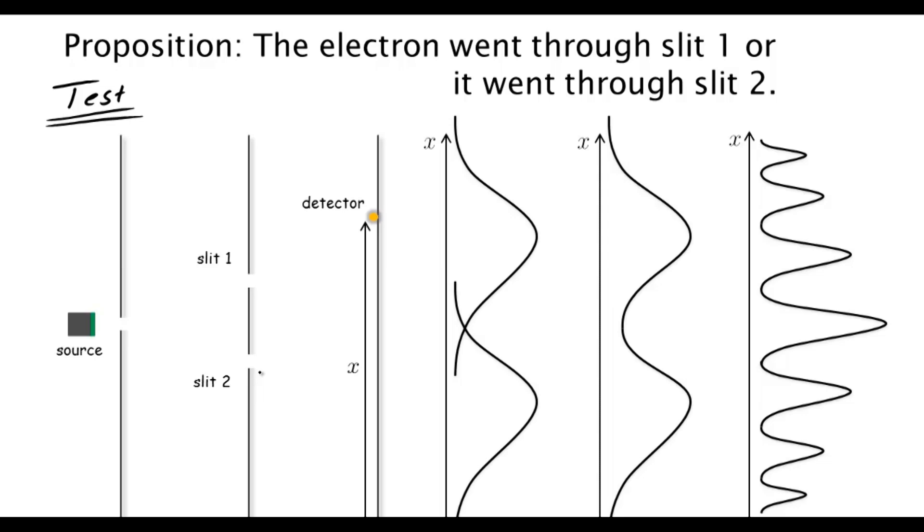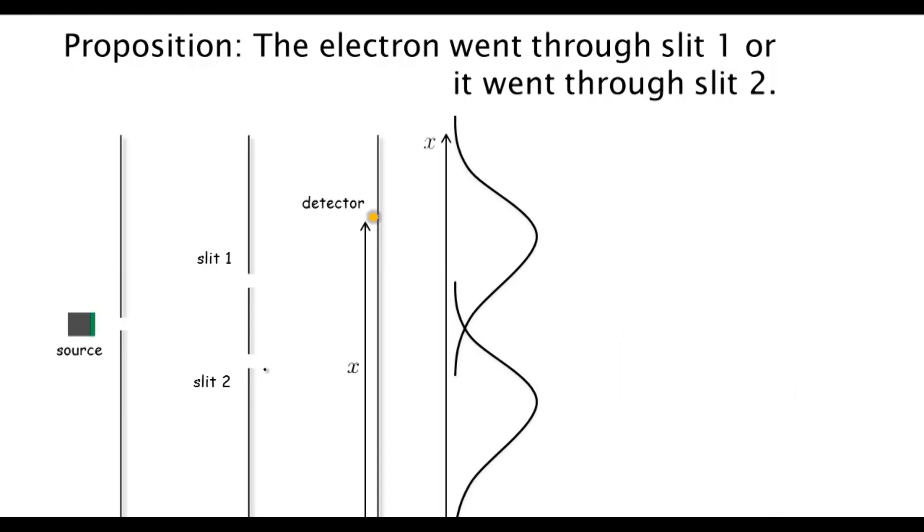If the electron is going through slit 1, we'll detect it there. Similarly for slit 2. Now we leave both slits open, and we count how many electrons arrived at a particular point X, while also keeping track of whether an electron went through slit 1 or slit 2.